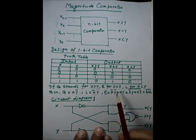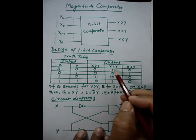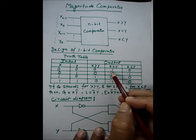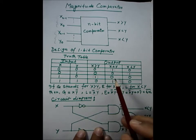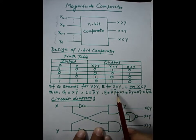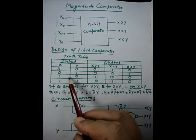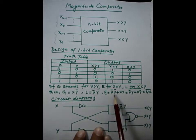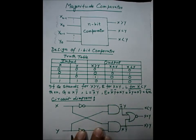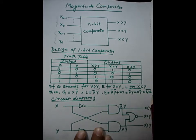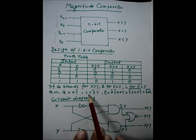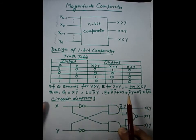For X equal to Y, there are two cases: X̄·Ȳ and X·Y. So the equal output is X̄·Ȳ plus X·Y. We know that this is the expression for the complement of exclusive-OR. So the equal output is the XNOR of X and Y. G is X·Ȳ and L is X̄·Y, and we have shown those expressions here.